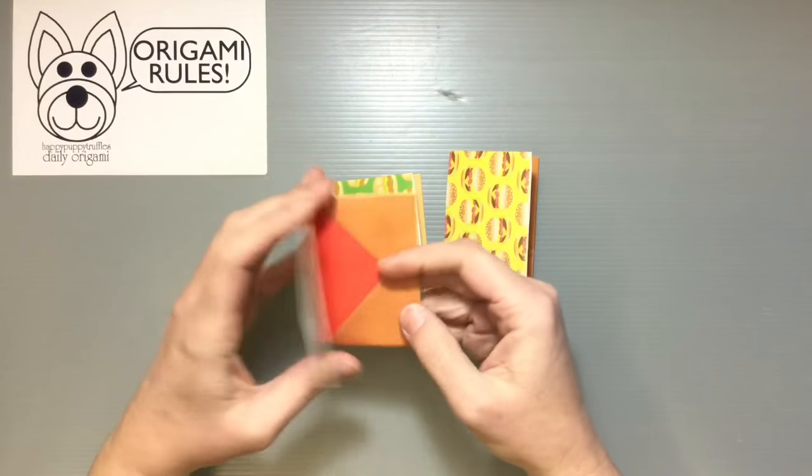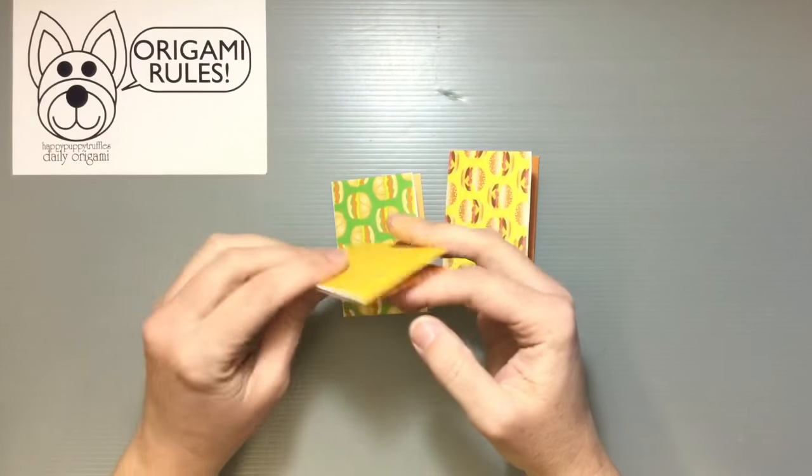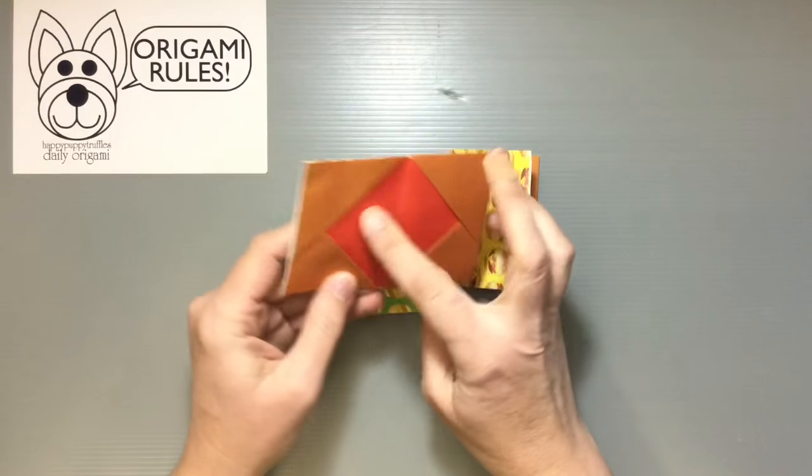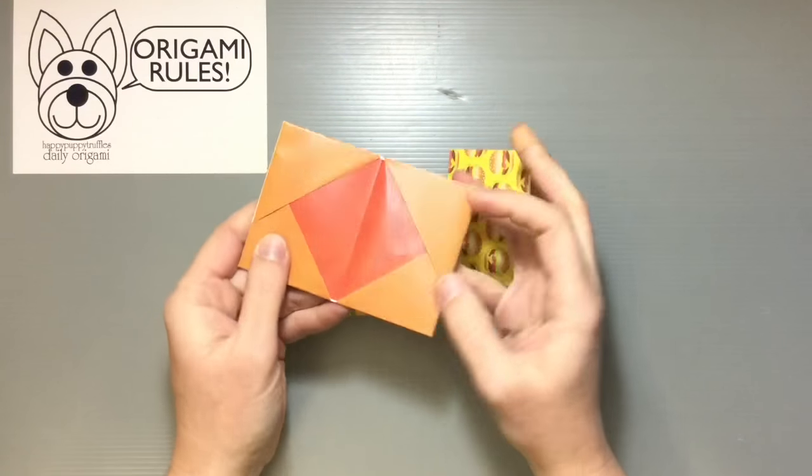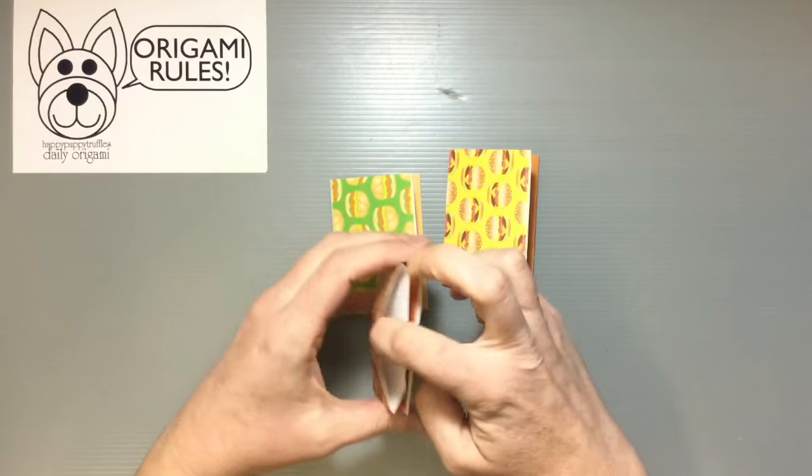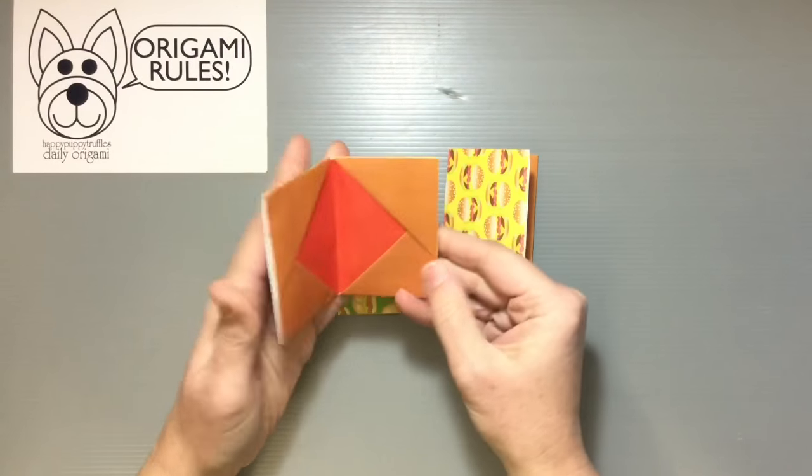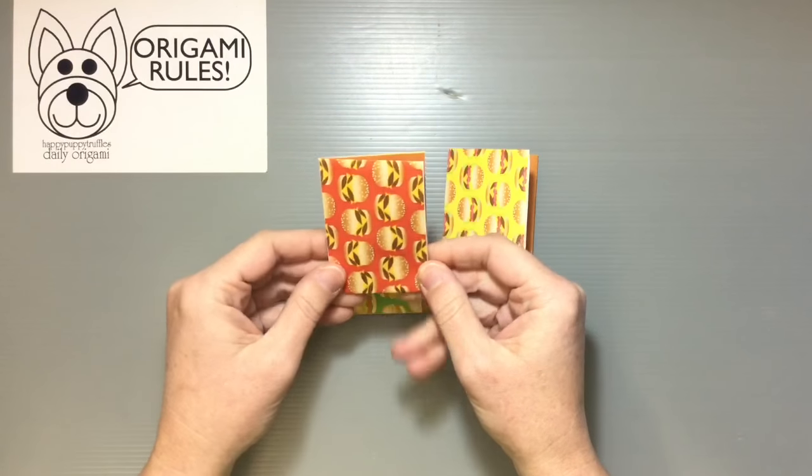This is a really fun, one of my favorite traditional origamis. It's just a folder case and there's just so many little pockets that you can use to put things in everywhere. It makes this kind of cute little book, so you can use it for so many things.